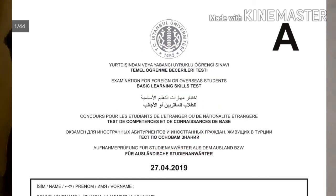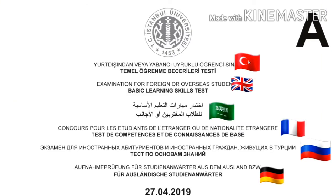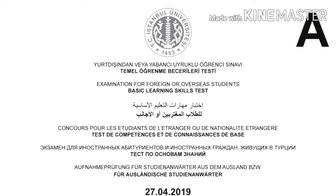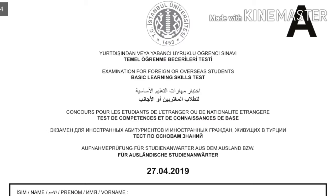The range of questions and the type of questions for the basic learning skills test may be the same across universities. Mathematics probably tests basic mathematics: systems of equations, geometry, trigonometry, and other topics. A unique feature of this test is that it is translated into multiple languages — Turkish, English, Arabic, French, Russian, and German. In this 2019 YOS exam from Istanbul University, we have 80 questions in Part A.